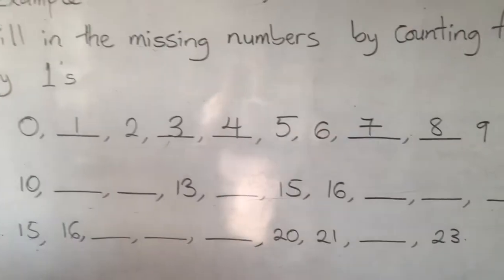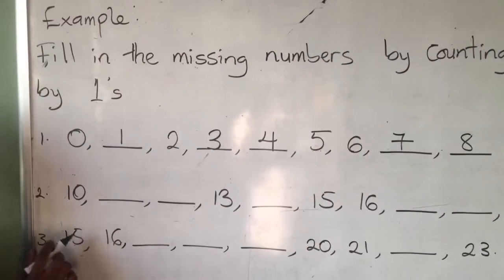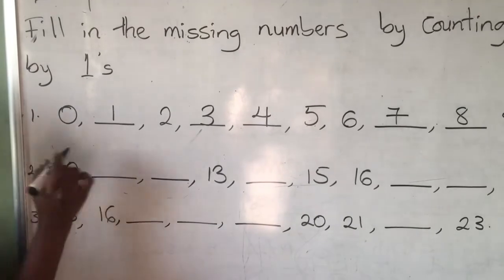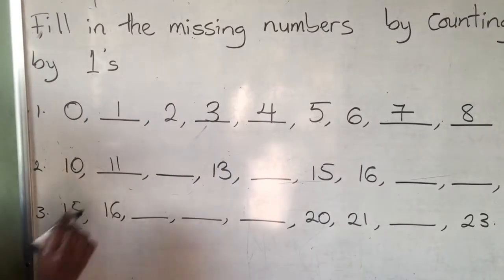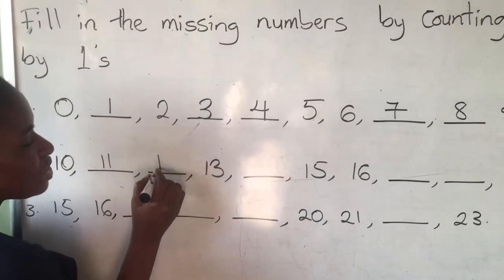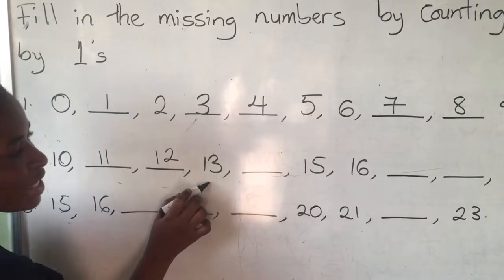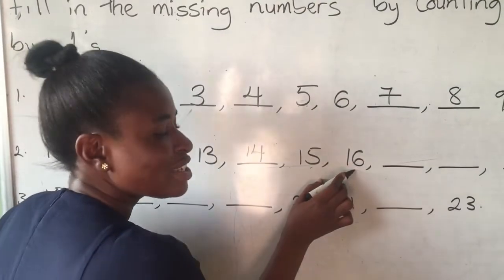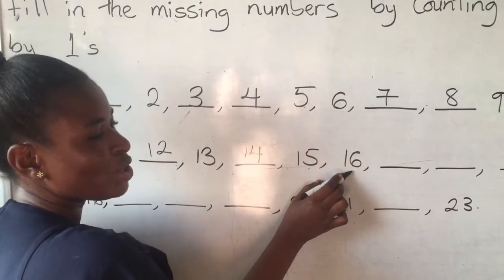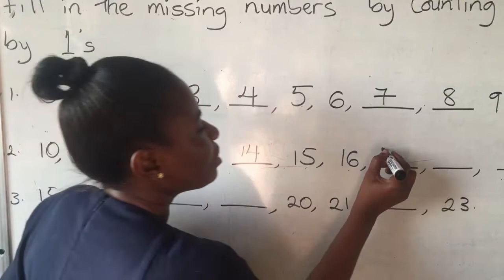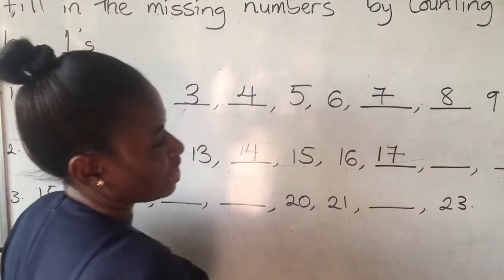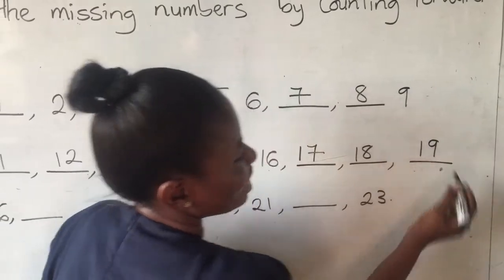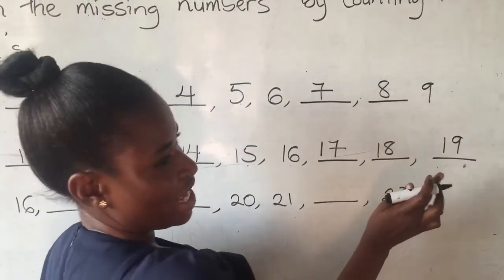Let's look at example 2. Example 2 started from where? 10. So from 10, where do we go to? 11. That's good. Now, from 11, 12, then 13, 14, 15, 16. From 16, where do we go to? Very good. 17, 18, and then 19. This is where our dash ended, so we end here.